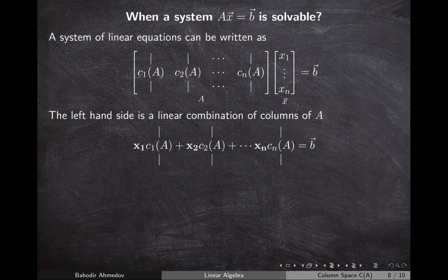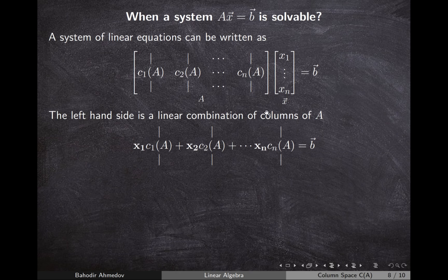We need the column space to understand the solvability of a system of linear equations Ax = b. Multiplying matrix A by vector x can be viewed as a linear combination of the columns of A — the first column multiplied by the first component of x, the second column by the second component, and so on. So solving Ax = b means finding a specific linear combination of the columns of A that equals b.